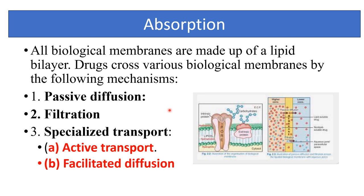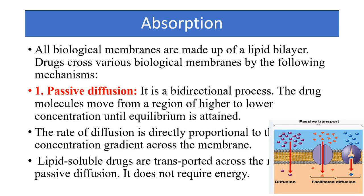The mechanisms of drug absorption include passive diffusion, filtration, and specialized transport such as active transport and facilitated diffusion. Passive diffusion is a bidirectional process where the drug molecule moves from a region of higher concentration to lower concentration until equilibrium is attained. The rate of diffusion is directly proportional to the concentration gradient across the membrane. Lipid-soluble drugs are transported across the membrane by passive diffusion, and it does not require any energy or carrier.